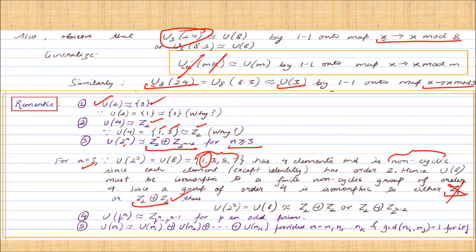Since U8 is non-cyclic, it cannot be isomorphic to Z4, leaving the only choice Z2 × Z2. Hence the fourth remark: U(p^n) is isomorphic to Z_{p^n − p^{n−1}} whenever p is an odd prime. The last remark: for any composite n expressible as a product of k numbers with pairwise gcd equal to 1, U(n) is isomorphic to the external direct product of the corresponding U(n_i)'s.